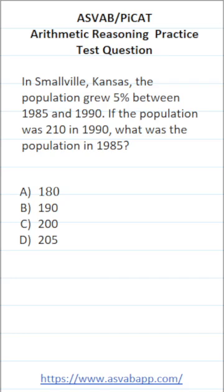This arithmetic reasoning practice test question for the ASVAB and PiCAT says, in Smallville, Kansas, the population grew 5% between 1985 and 1990. If the population was 210 in 1990, what was the population in 1985?